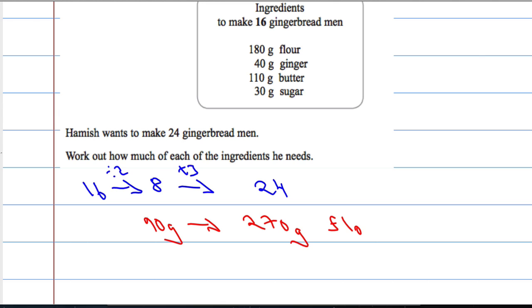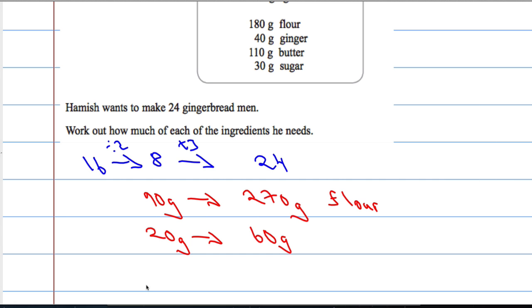Ginger: dividing it by 2, we're going to get 20 grams of ginger, and times it by 3, we get 60 grams of ginger.